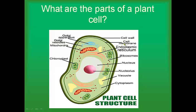The next one I'm going to talk about is the cell membrane. The cell membrane controls what comes in and out of the cell. It allows good things to come into the cell and bad things to go out. It also allows proteins, which are good things that the cell makes, to go out of the cell. So it kind of controls what comes in and what goes out.